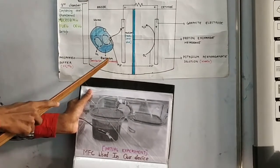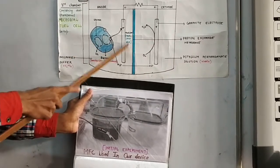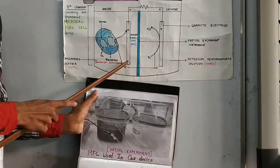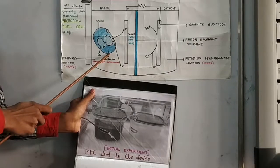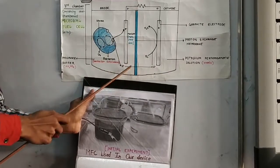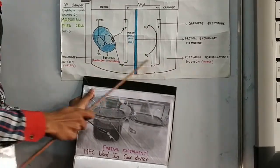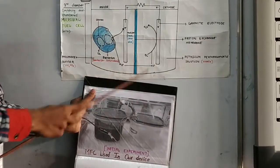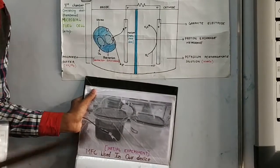When we add food waste in the anaerobic chamber and the bacteria decomposes it, electrons are separated. The methylene blue mediator will carry electrons to the graphite rod and accumulate them. The protons pass through the proton exchange membrane to the cathode chamber, which is an aerobic chamber.